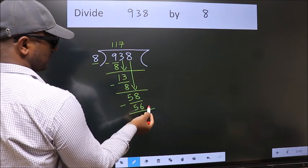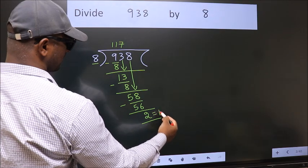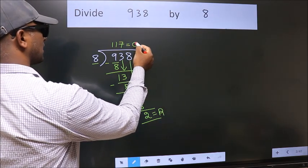No more numbers to bring down. So we stop here. This is our remainder. This is our quotient.